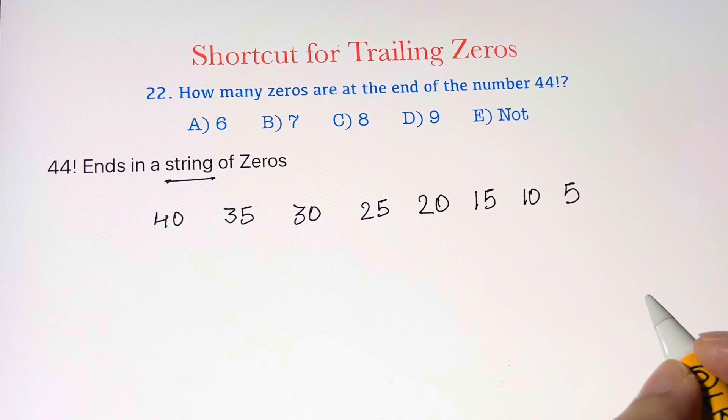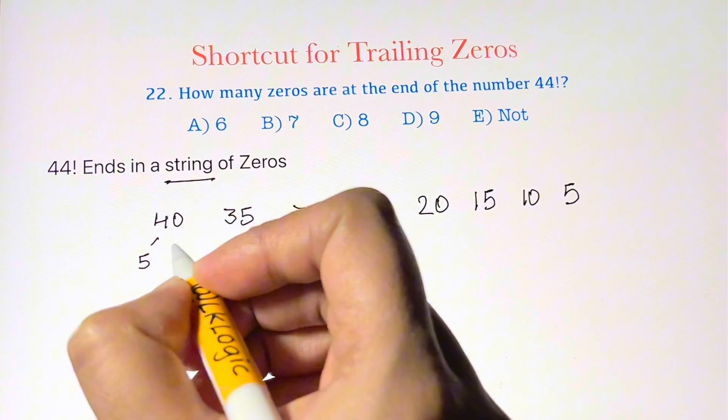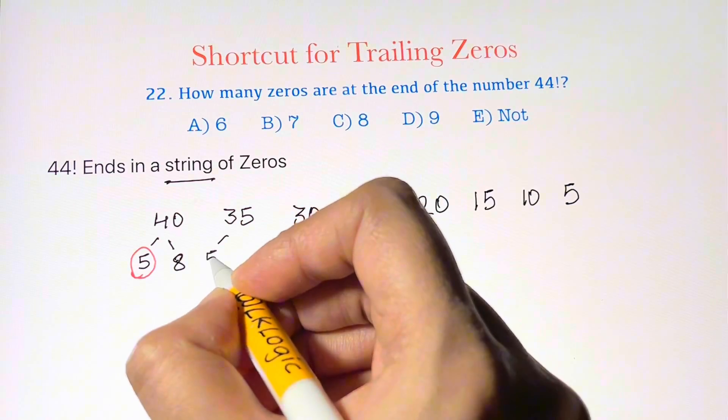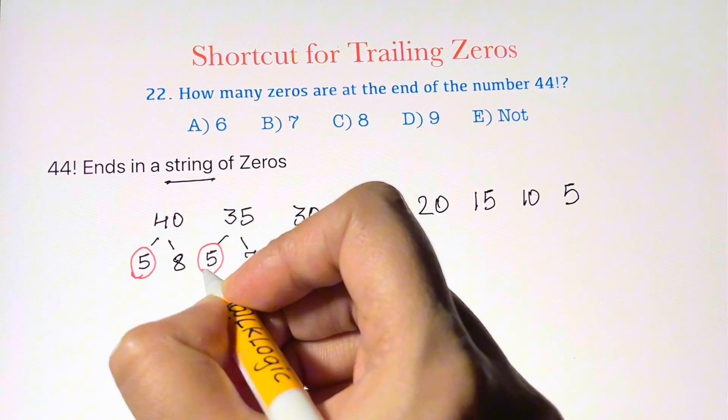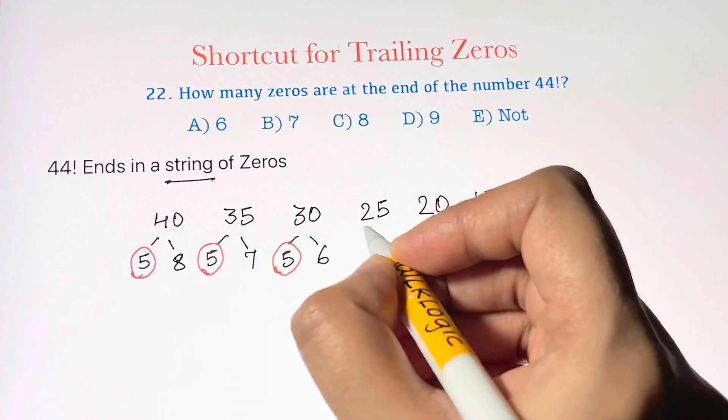We can take plenty of factors but we are only concerned with the factors of 5. Write down the factors of 40, that is 5 and 8, so we have one factor of 5 in there. For 35, 5 and 7, we have one factor of 5. 30 is 5 and 6, we have one factor of 5 here. For 25, we have 5 and 5, there are two factors of 5 here.